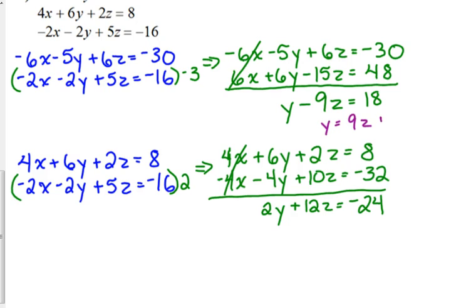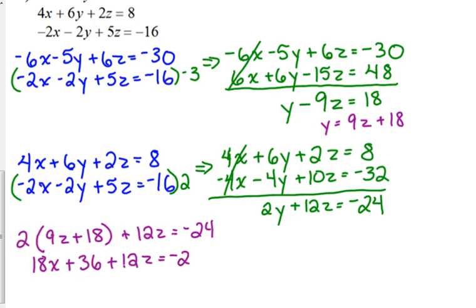So, I'm going to add the 9z. And, I'm going to plug that into the other equation. 2 times, instead of y, 9z plus 18 plus 12z is equal to negative 24. Distribute the 2. 18z plus 36 plus 12z is equal to negative 24. Combine those z's on the right side. 18 plus 12 is 30. Move the 36. So, negative 24 minus 36 is negative 60. So, when we divide by 30, we get z is negative 2.